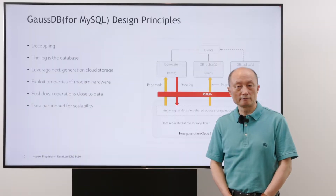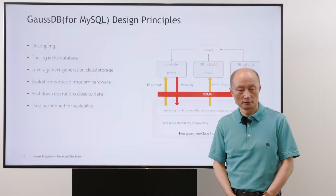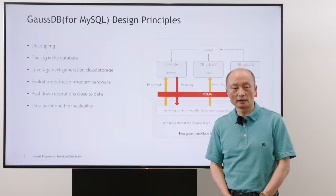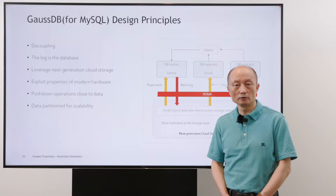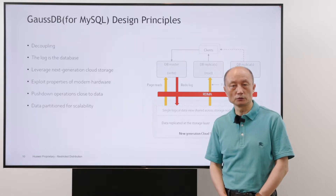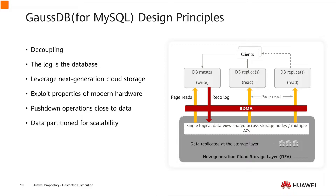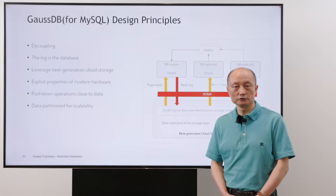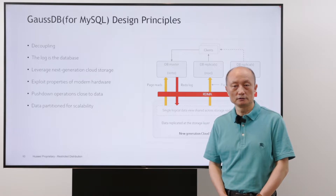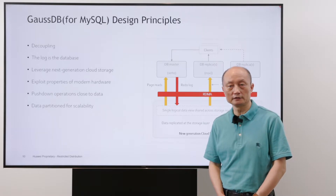Third, leverage next-generation cloud storage. The durability and data replication are done in the storage layer, which is highly reliable and has many enterprise features, including auto-healing and flexible consistency. We also exploit properties of modern hardware, for example RDMA or tiered storage. We also push down operations close to data because of smart storage with computational power. Data is automatically partitioned into multiple storage nodes and supports up to 128 terabytes of data for each database.